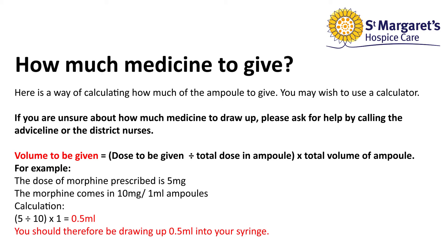The prescribed dose is 5 mg of morphine sulphate. Morphine comes in 10 mg in 1 ml ampoules. The total dose of morphine in the ampoule is 10 mg. The total volume of the ampoule is 1 ml. Divide 5 by 10, which is 0.5, and multiply this by 1, which gives 0.5 ml of the medicine to give.